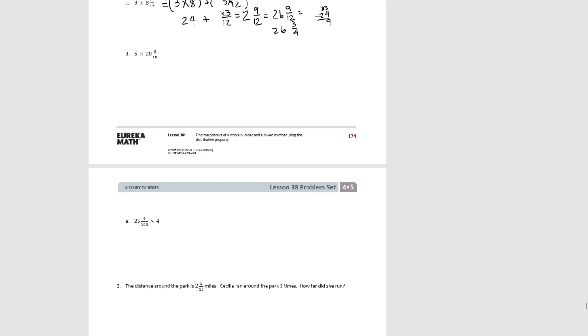For D, we have 5 times 20 plus 5 times 8 tenths. When we multiply, we get 100 plus 40 tenths. This would be 100 plus 4, which equals 104.